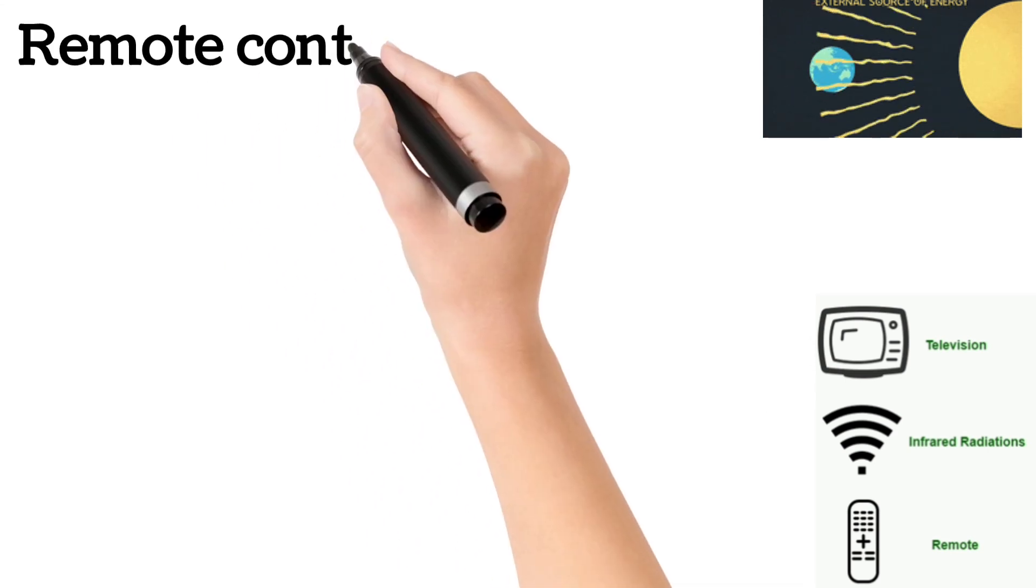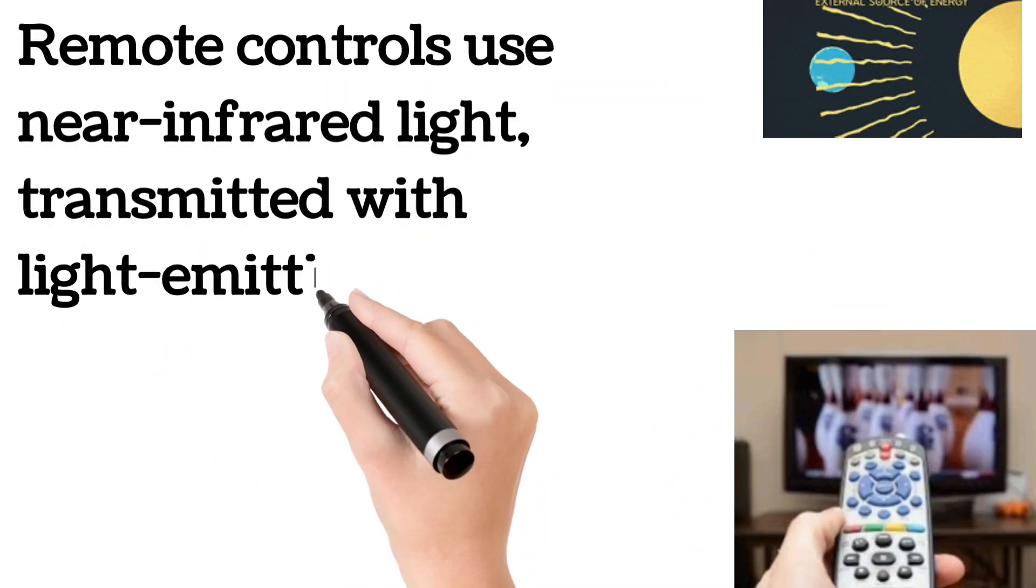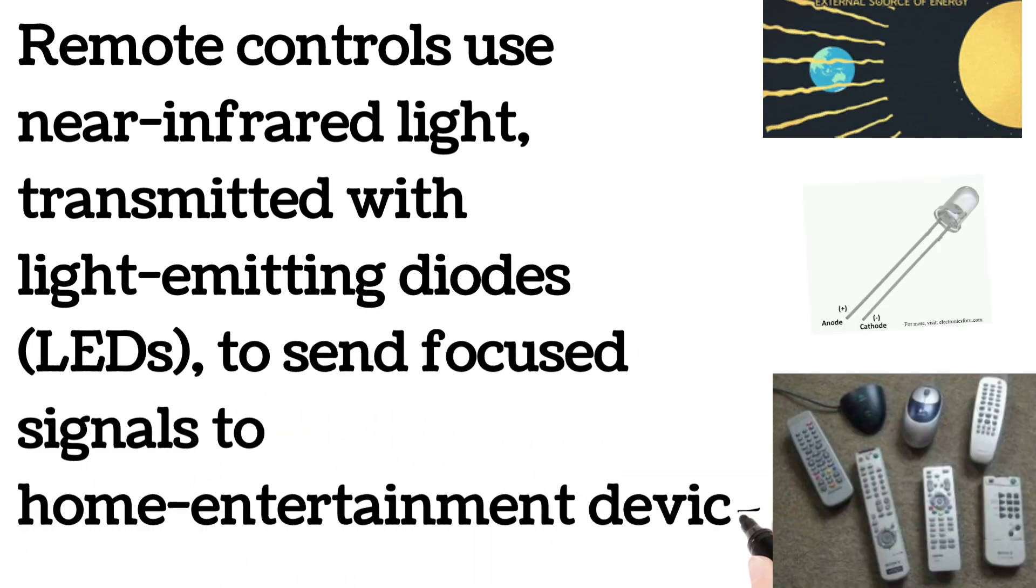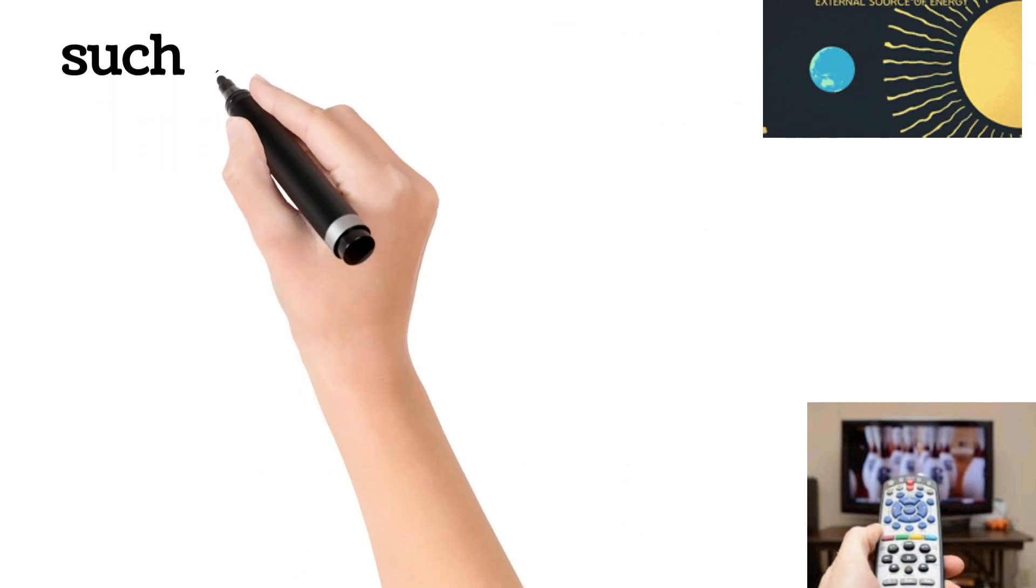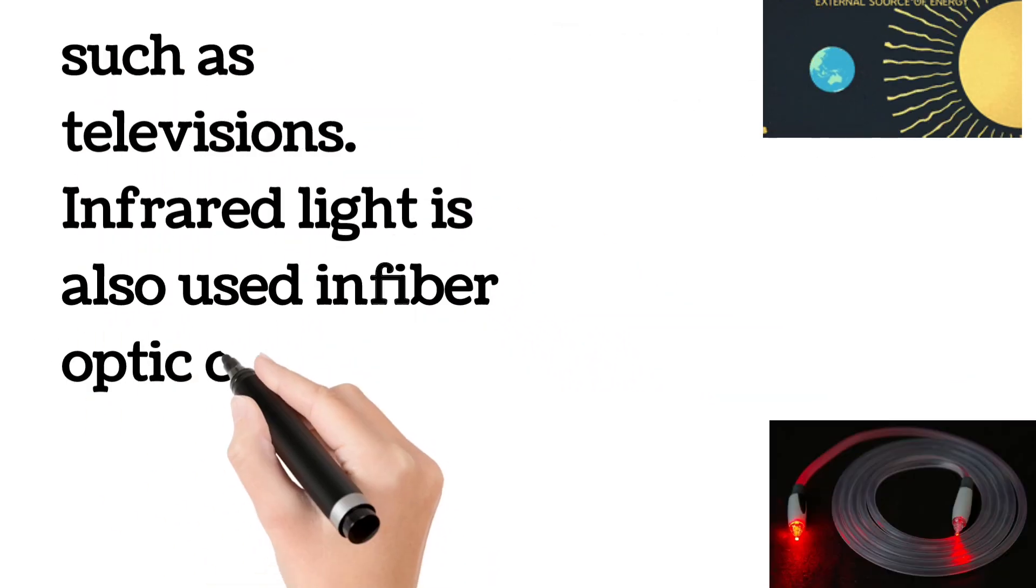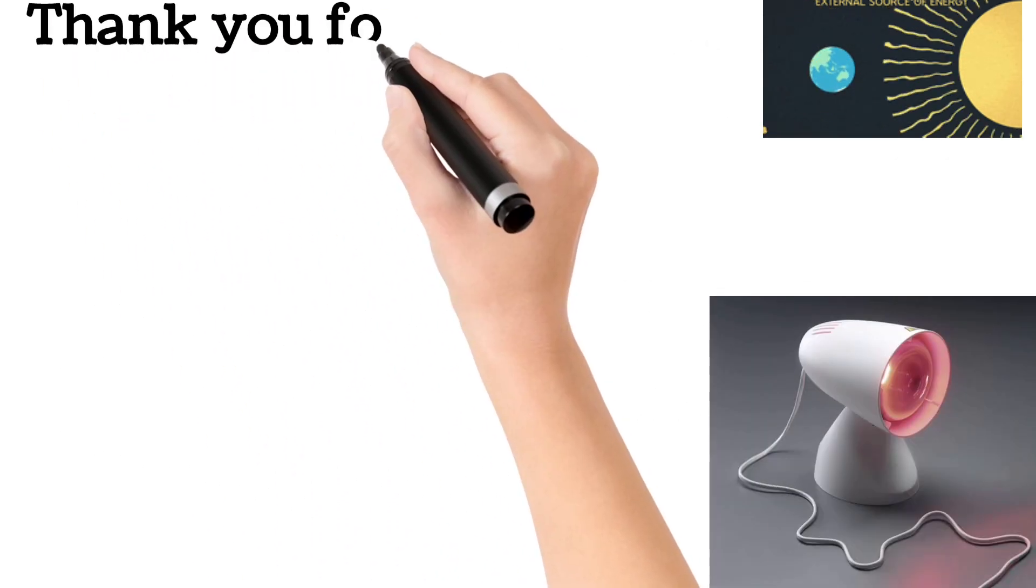Remote controls use near infrared light, transmitted with light-emitting diodes LEDs, to send focused signals to home entertainment devices, such as televisions. Infrared light is also used in fiber optic cables to transmit data.